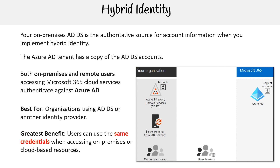Looking at the visual here, you have your Active Directory Domain Services accounts, and you have servers running Azure AD Connect to synchronize and copy the accounts to Azure AD. Through this, both on-premises and remote users can access Microsoft 365 to utilize all its apps and cloud services. So that's the hybrid identity model.